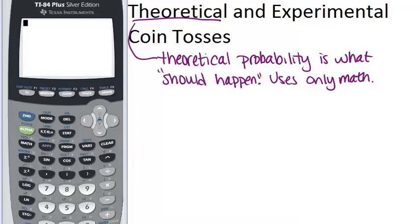So, for example, if you were to toss a coin, the probability that you get heads, the theoretical probability, is one-half. Because there are two sides to the coin, and you have an equal chance of getting each. So the probability of heads is one-half, and the probability of tails is one-half.